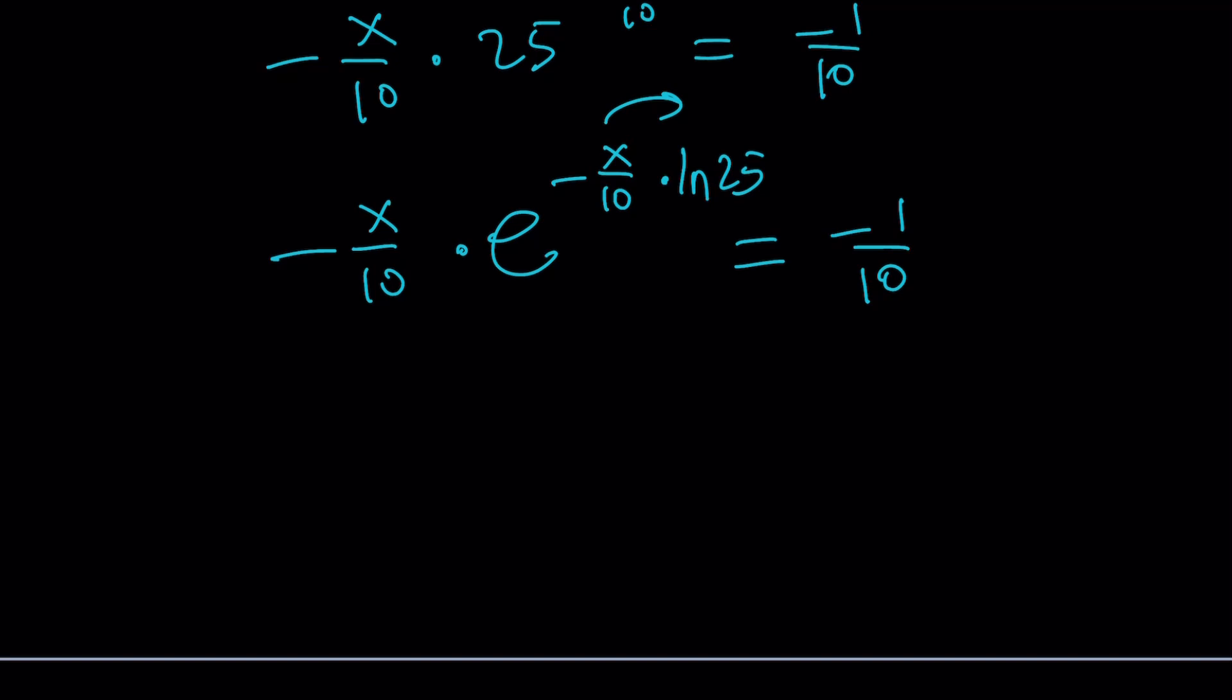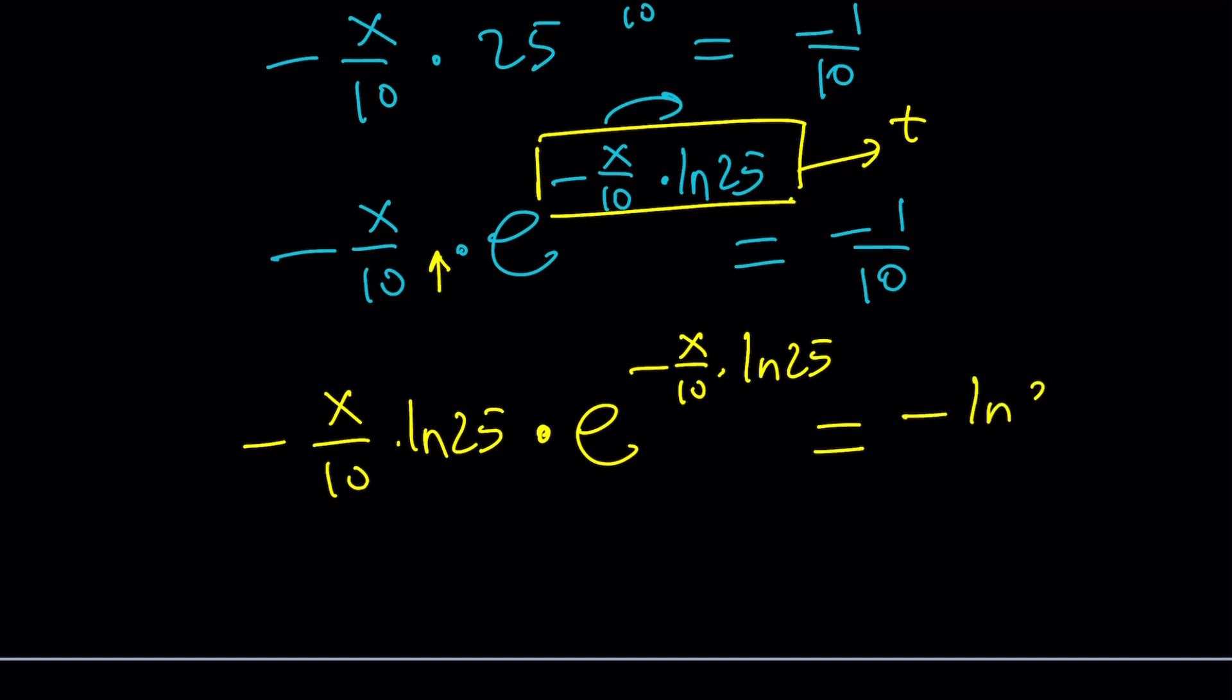But I can write it as negative x over 10 times ln 25. Think about it. Move this back as a power, and you'll get that. And, of course, at this point, I haven't really done anything like multiply or divide by anything. So, this is good. Now, since I have my t as this, I do need ln 25 here. Make sense? So, multiply both sides by ln 25, and you're going to get the t. And what is t? t is negative x over 10 times ln 25. This is my t. Get it? And, of course, since I multiply both sides by ln 25, this should be ln 25 over 10.